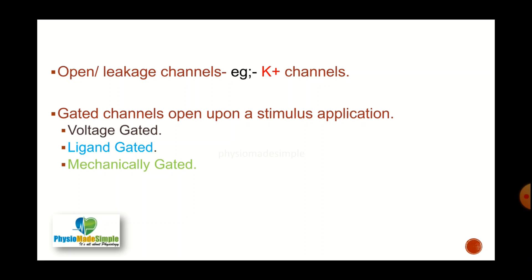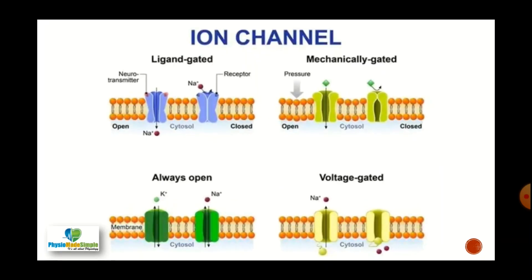For example, when pressure is exerted on the membrane, due to that pressure stimulation some channels may open and ions may enter or exit the cells — such channels are called mechanically gated channels. A picture shows the various types: ligand gated channels with neurotransmitters, mechanically gated channels that open under pressure, leakage channels that are always open, and voltage gated channels that open upon electrical stimulation.